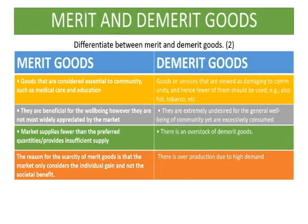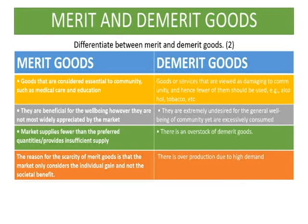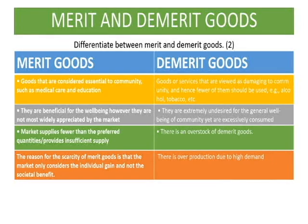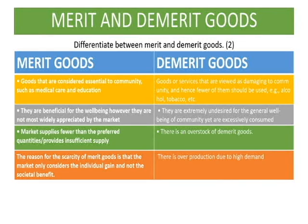The reason for the scarcity of merit goods is that the market only considers individual gain and not the societal benefit. When it comes to demerit goods, there is overproduction due to high demand. Because the demand for demerit goods is very high, there is an overstock, and hence overproduction of demerit goods.